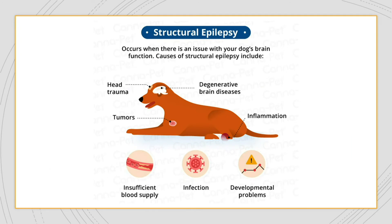Structural epilepsy is when the underlying cause can be linked to abnormal brain function. This could include any kind of obstruction in the brain, bleeding, insufficient blood supply, a tumor, infection, developmental problems, brain diseases, or head trauma — where the physical impact to the brain can lead to seizures.